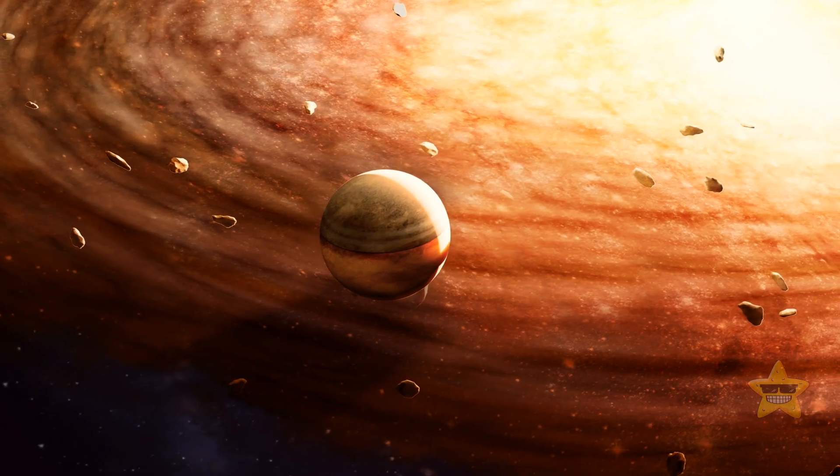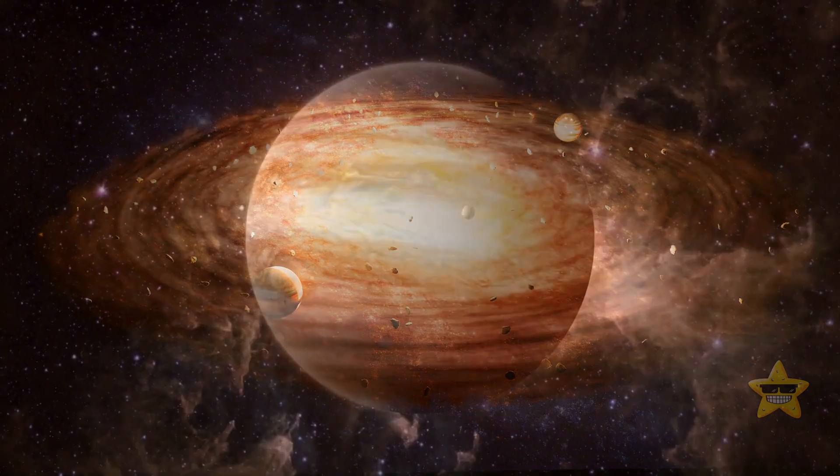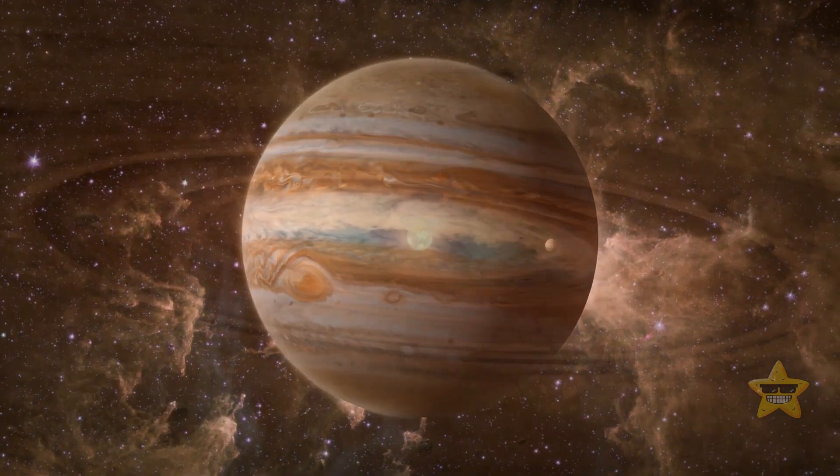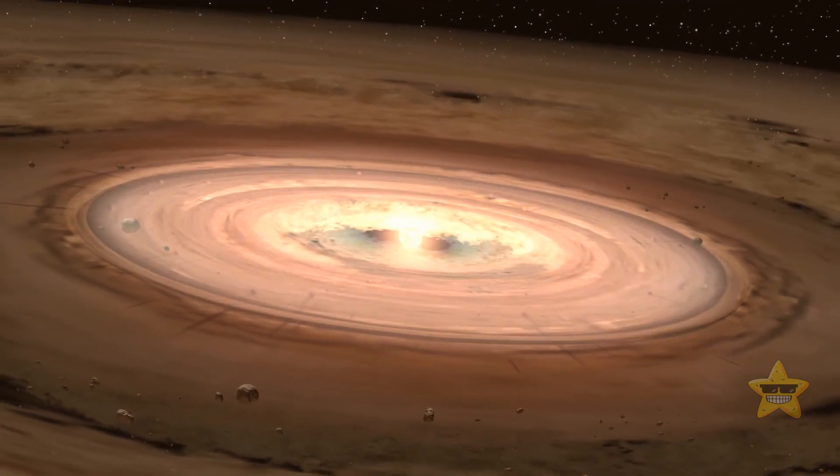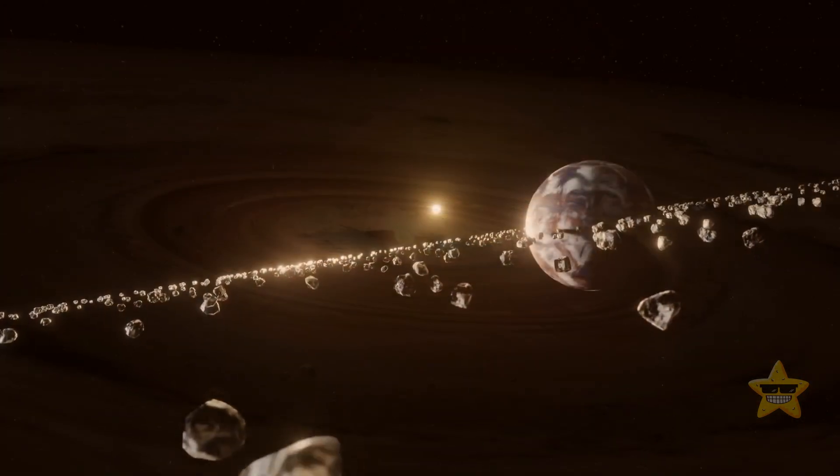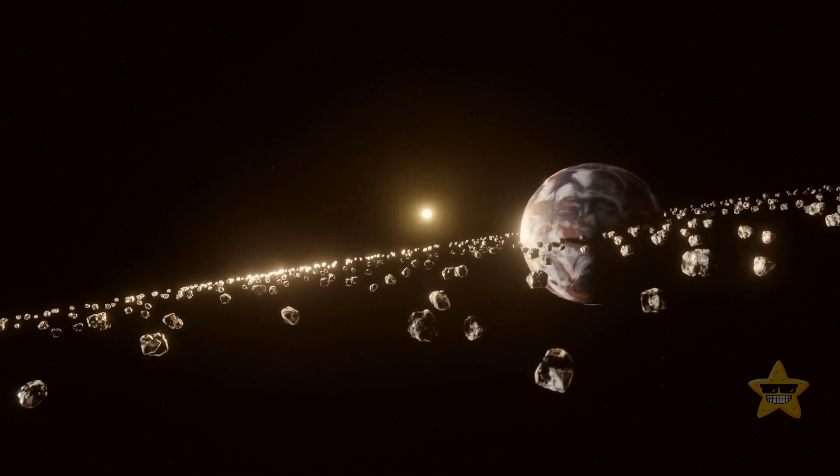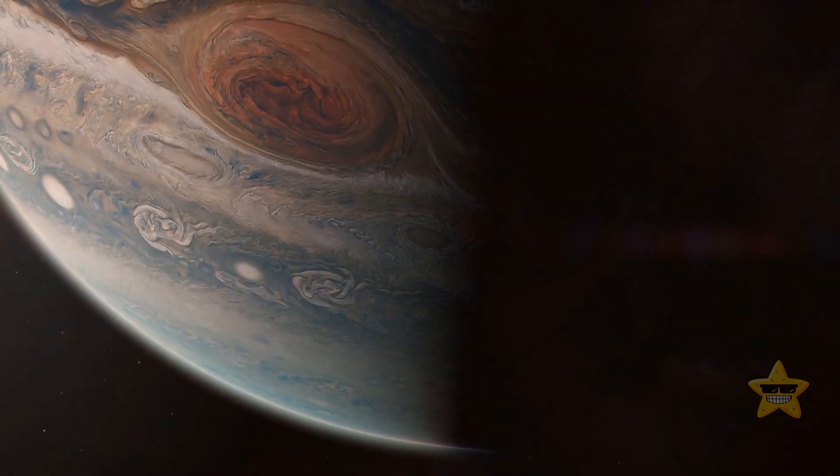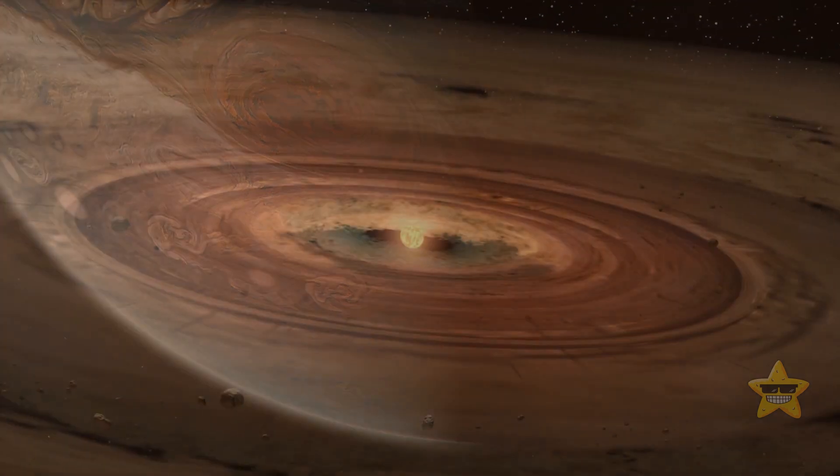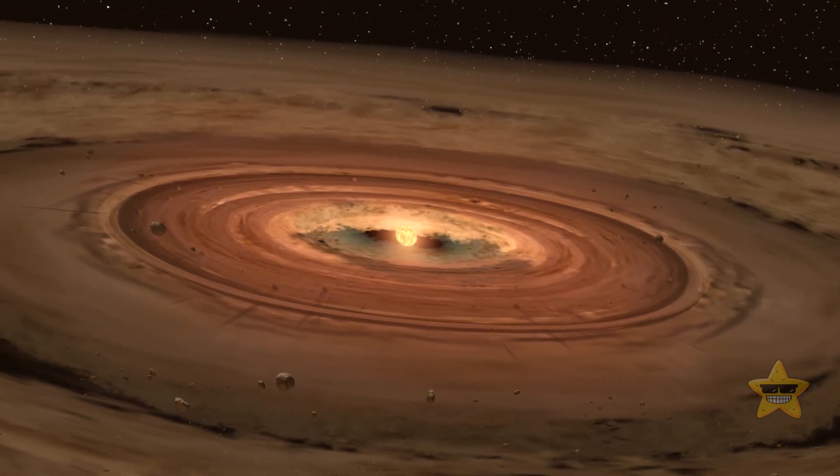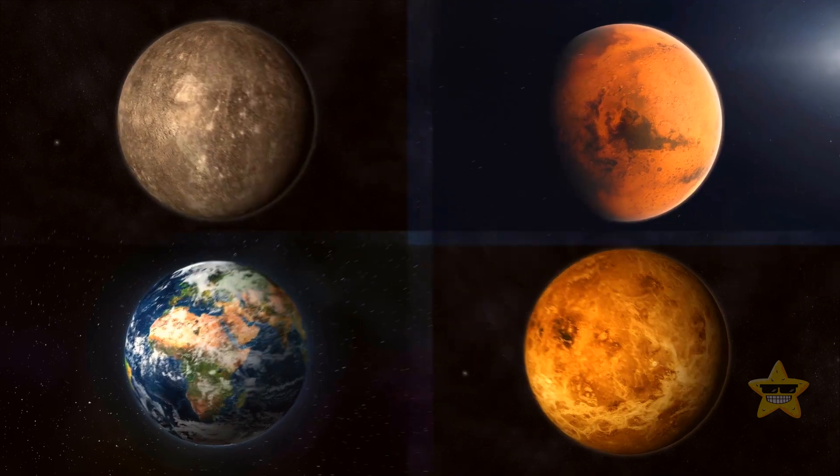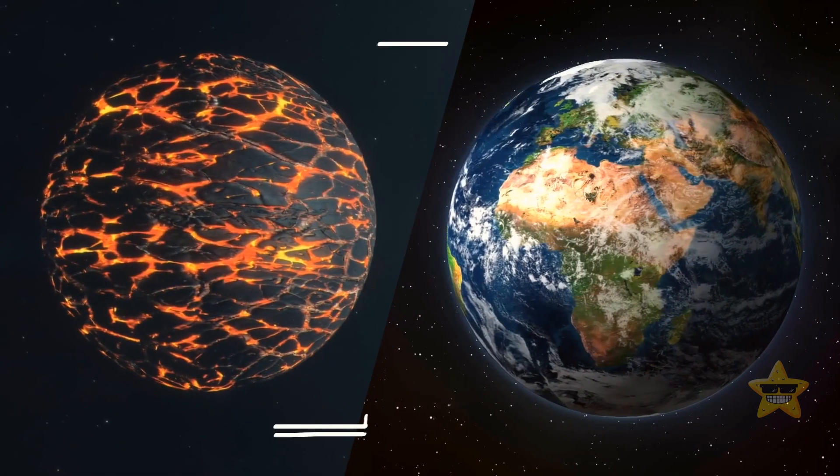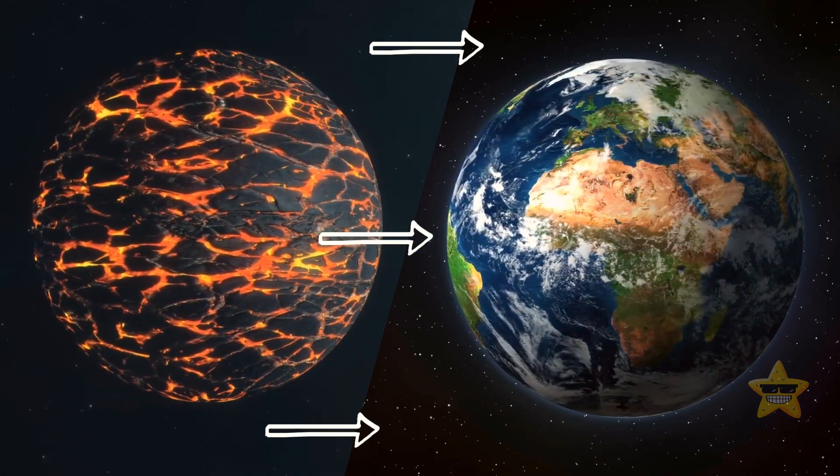Jupiter and Saturn probably formed first, maybe even within the first 10 million years of the existence of our solar system. Parts of the disk that were closer to the sun remained warm. The material there gathered into rocky planets. After the icy giants appeared, not much gas was left for the other ones though. So Mercury, Venus, Earth, and Mars ended up a bit smaller. They may have taken tens of millions of years to form after the sun was born.